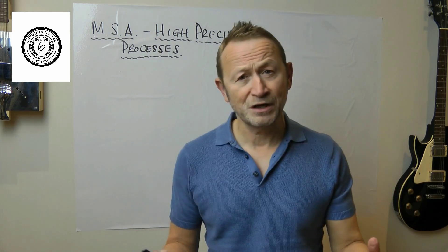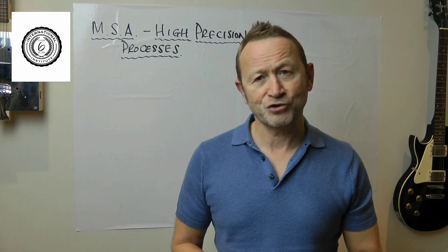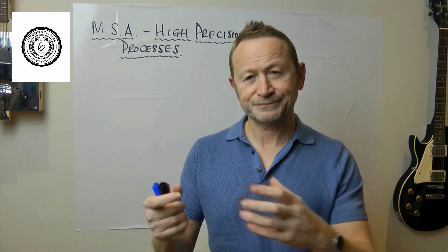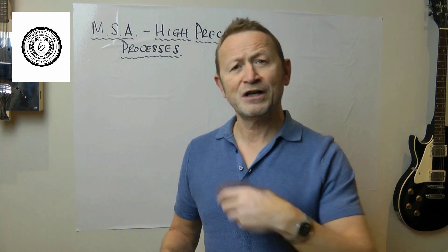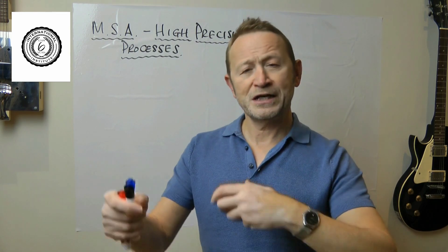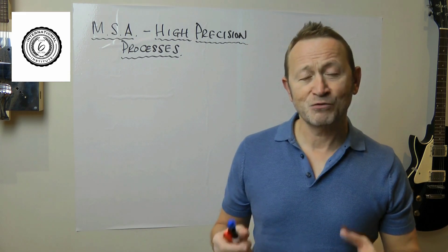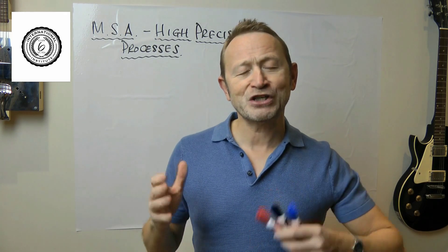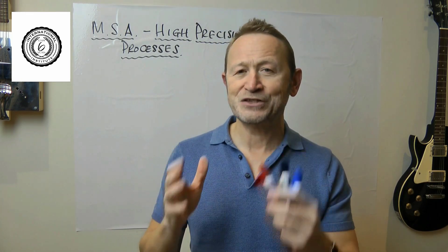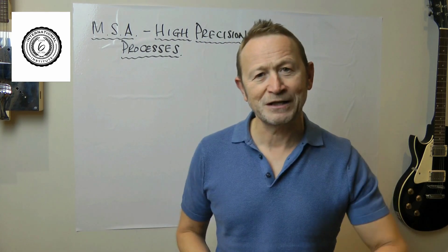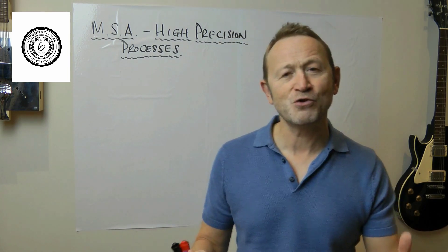This is a high precision part that they are measuring, something they've never done before. As we were doing the analysis, I was explaining what the pass and fail rules were. Because this was such a high precision process, we simply weren't passing the normal rules and it makes it look like the measurement system is very poor when in point of fact in a high precision situation it's very difficult to pass the normal rules.